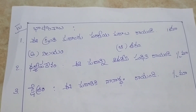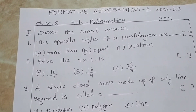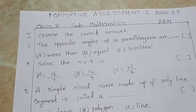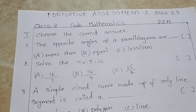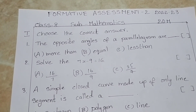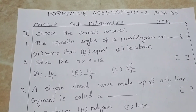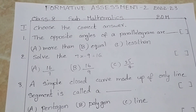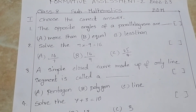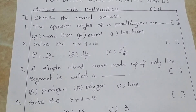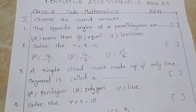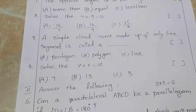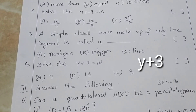Model paper — choose the correct answer. The opposite angles of a parallelogram are: equal, more than, less than. Solve 7x minus 9 equals 16: options 16/7, 16/9, 25/7. A simple closed curve made up of only line segments is called: pentagon, polygon, or line. Solve y minus 3 equals 10.